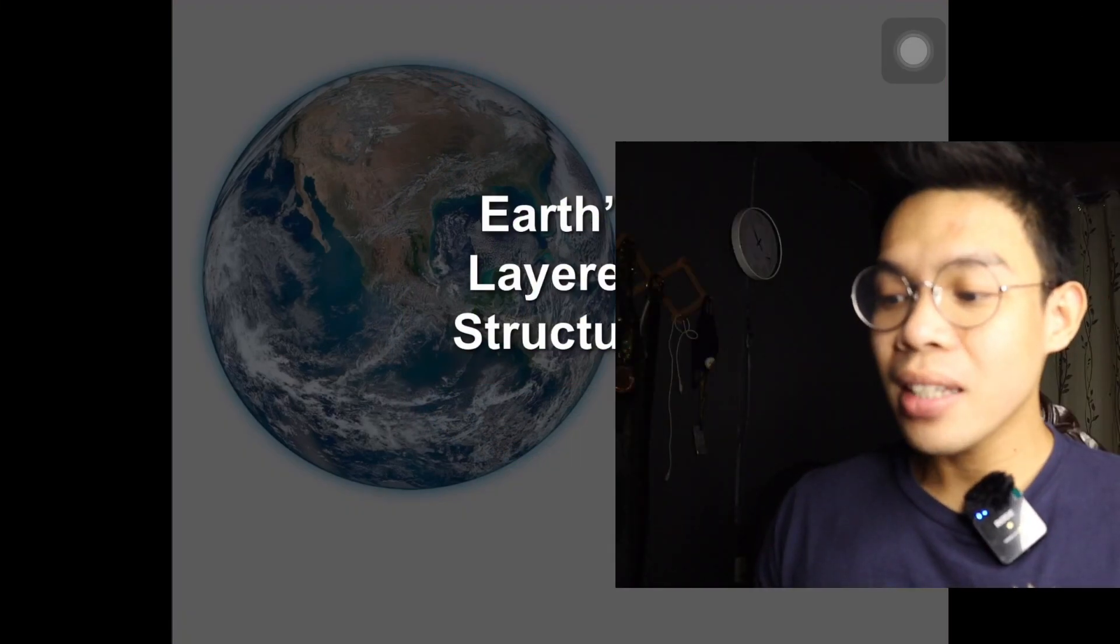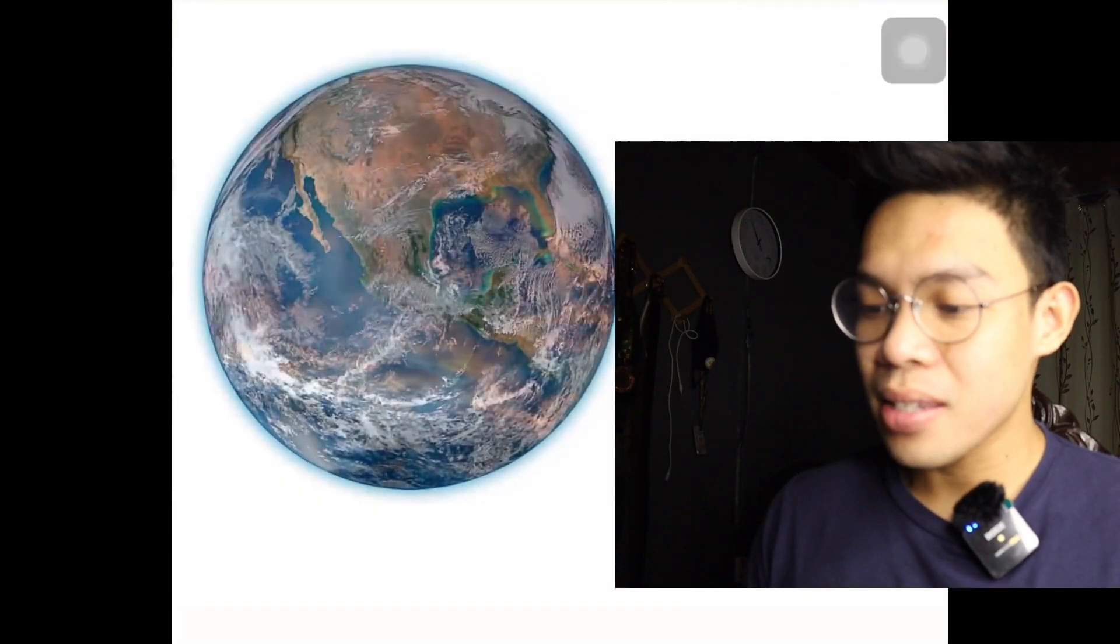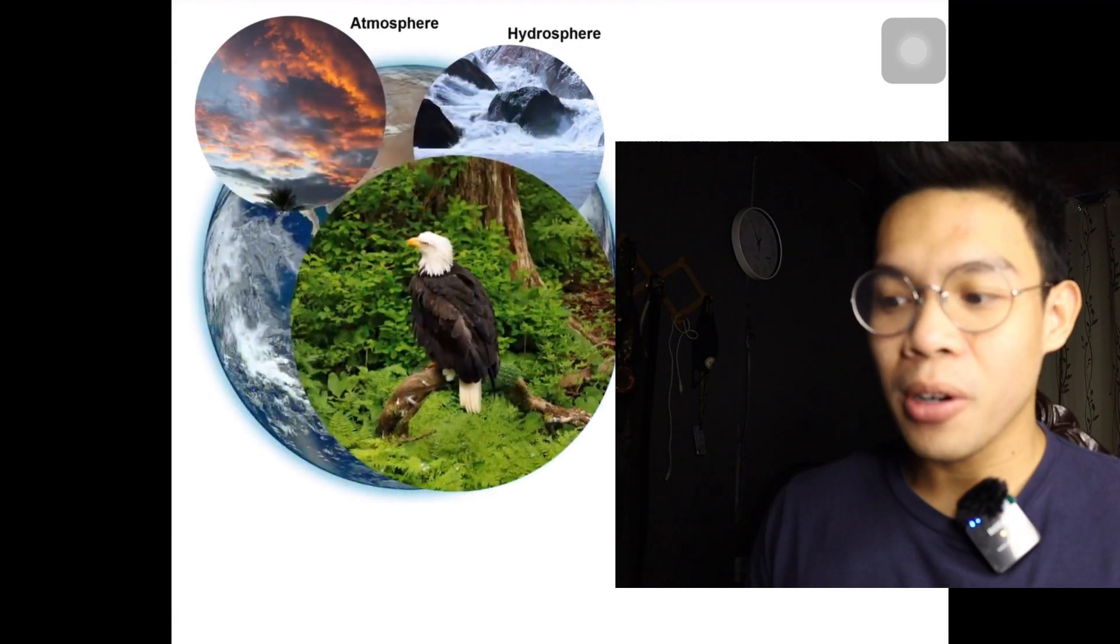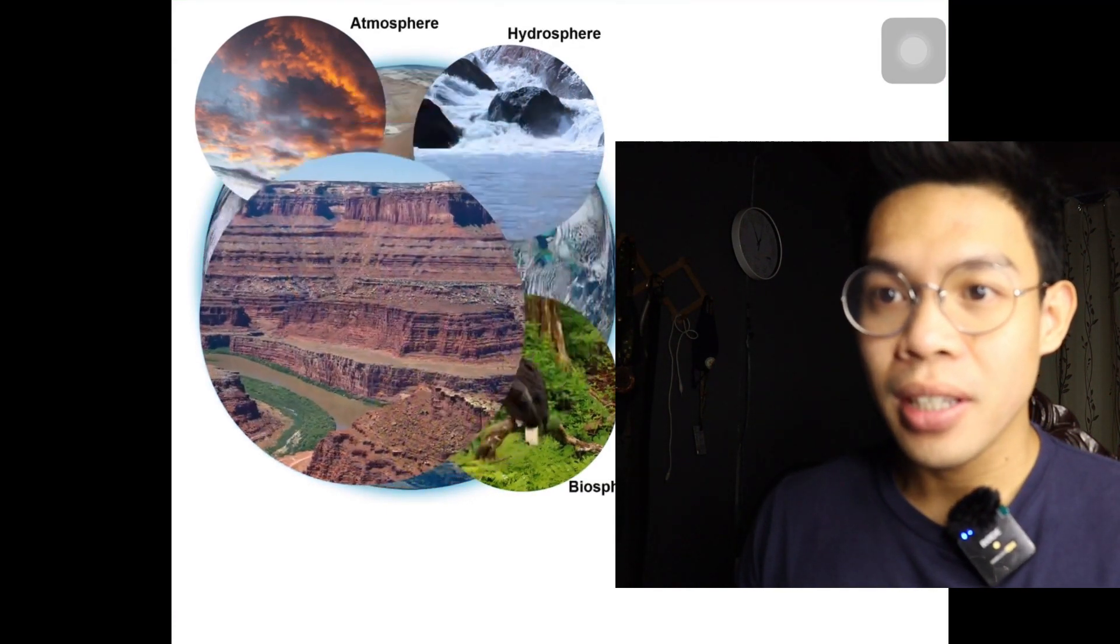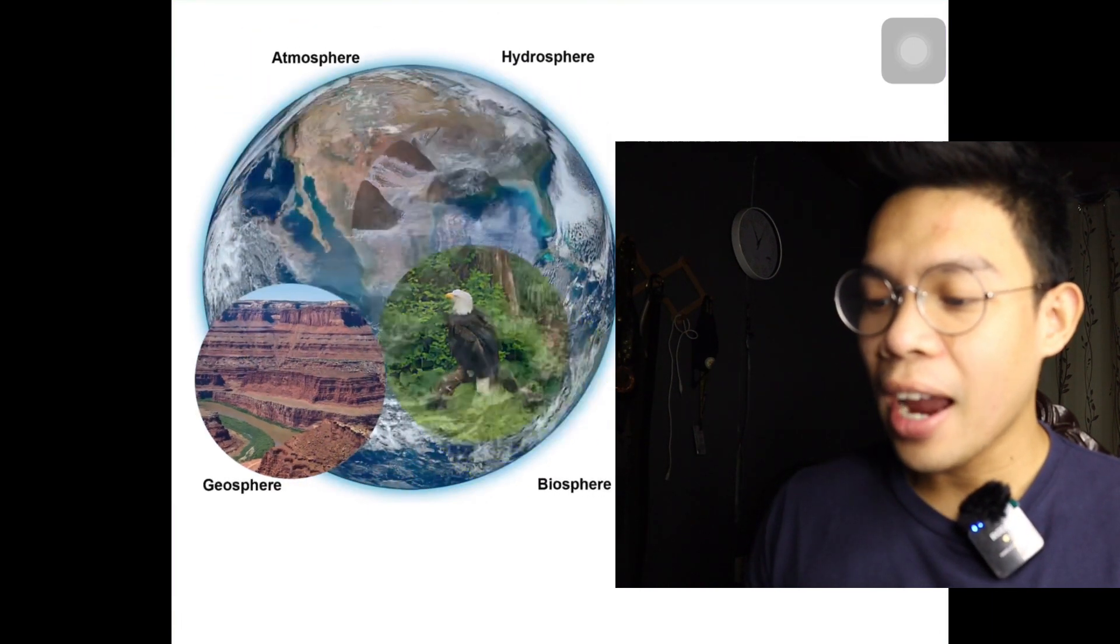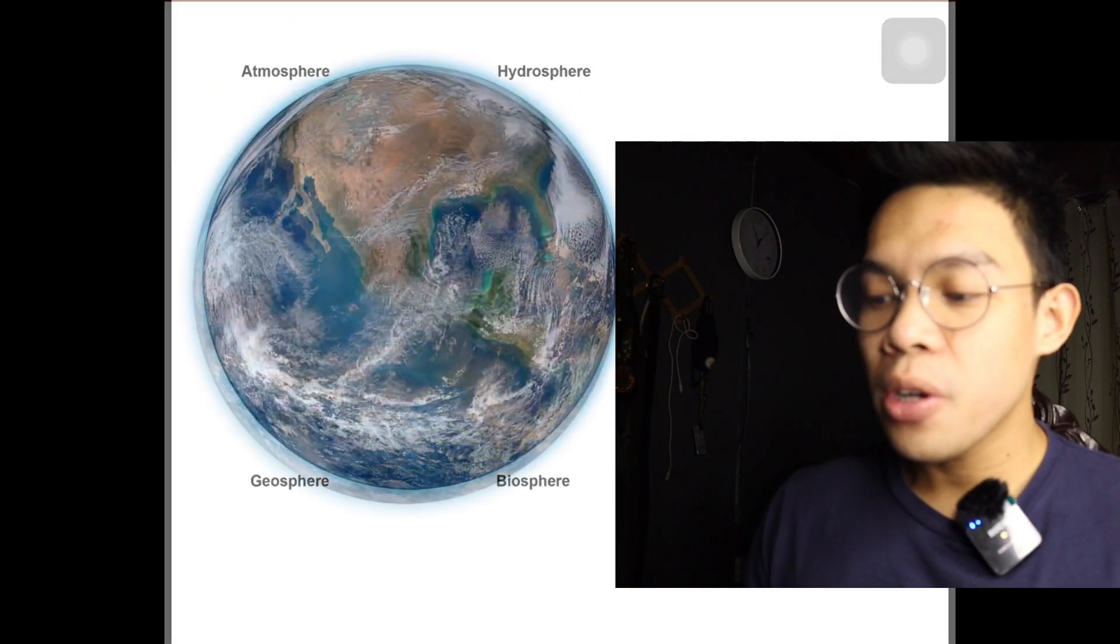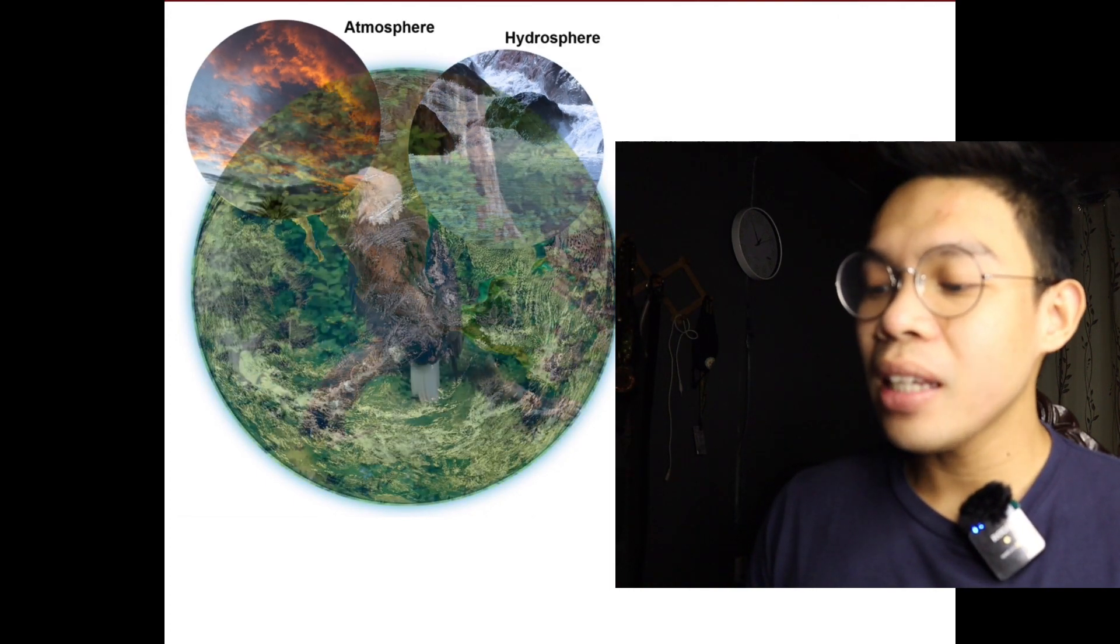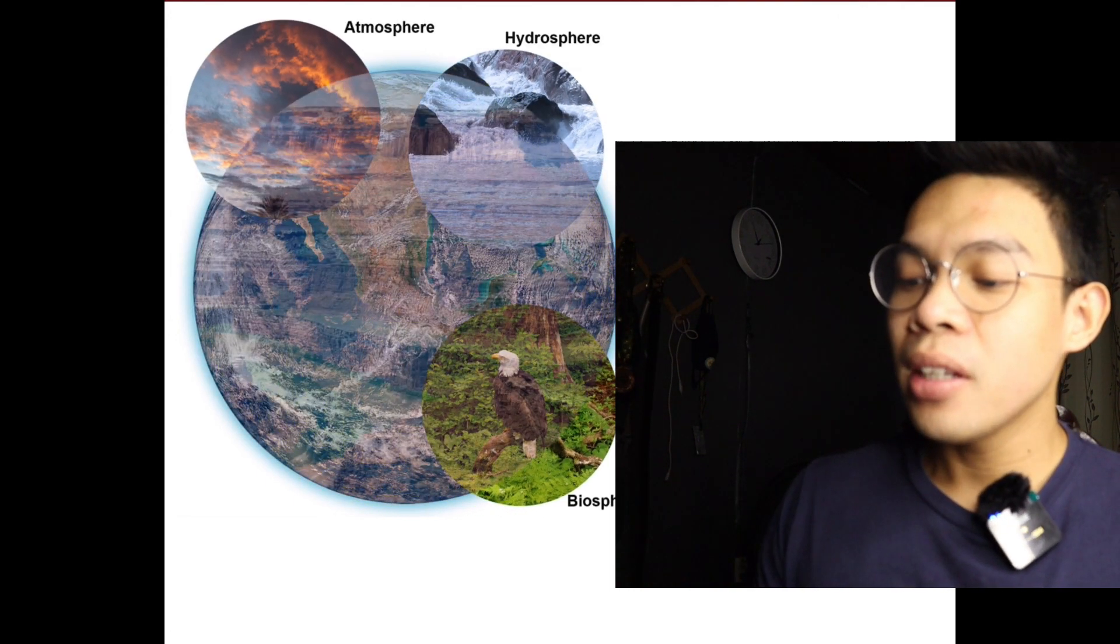Earth is truly a fascinating place. It is a dynamic planet with several interacting parts or spheres: the atmosphere, hydrosphere, biosphere, and geosphere. These are all separate but continuously connected parts that together form a whole called the Earth system.